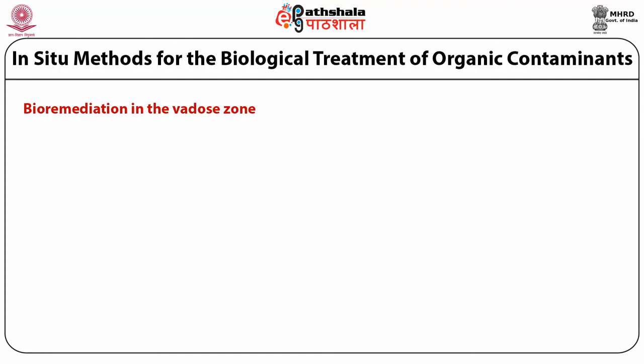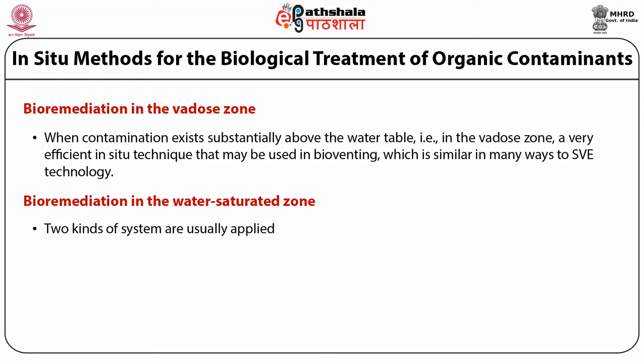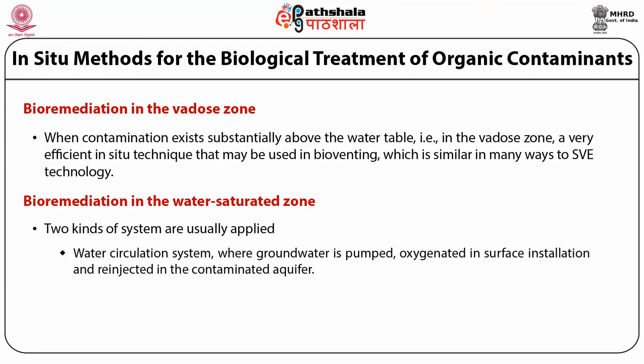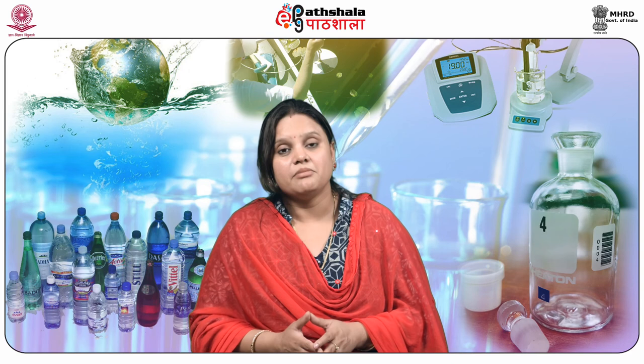The in-situ methods for biological treatment of organic contaminants: when contamination exists substantially above the water table — in the vadose zone — a very efficient in-situ technique that may be used is bioventing, which is similar in many ways to SVE technology. For bioremediation in the water-saturated zone, two systems are usually applied: the water circulation system, where groundwater is pumped, oxygenated in surface installations, and re-injected into the contaminated aquifer; and the air sparging system, which involves the injection of air directly into the groundwater.